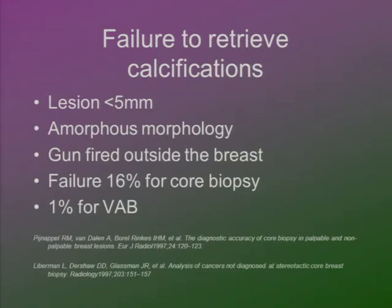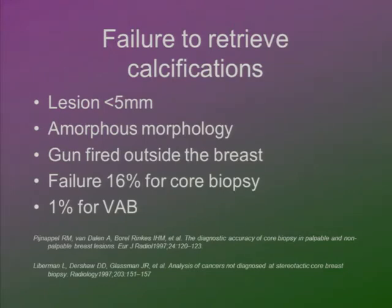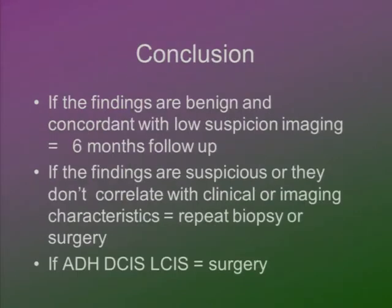It's harder if the lesion is less than five millimeters, though experience helps. Sometimes visualization of microcalcifications on the stereotactic table is more difficult than on mammography. Another problem is insufficient needle stroke — if the needle fires outside the breast, there isn't enough room for the vacuum needle. The failure rate for vacuum-assisted biopsy is down to 1%, compared to about 16% for core biopsy, making vacuum-assisted biopsy the method of choice.